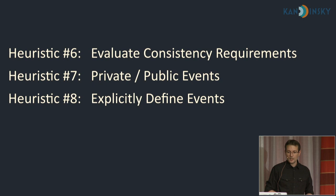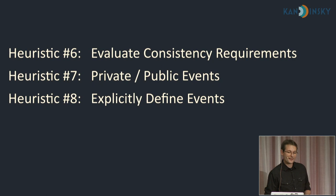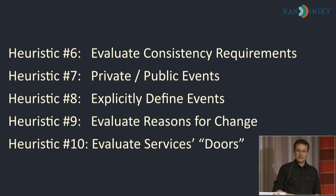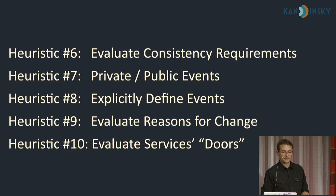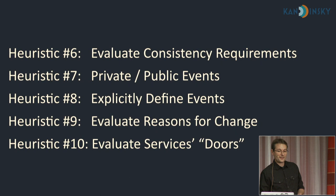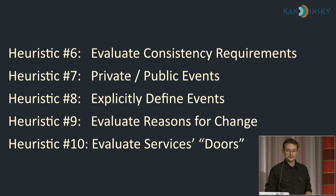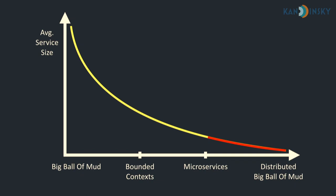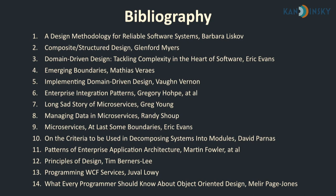Exposing too many event types couples the service to its clients — consider having private events as implementation details and exposing a restrained set of public events. Compress data from multiple private events into a wider public event to minimize outward-facing events. Remember that events come in two flavors — domain events and state-change events — use both when needed. Make sure events are self-describing and explicit. If multiple services change at the same rate, look to reduce coupling or merge them. Evaluate service front doors: if too wide, decompose; if dominated by integration methods, reassess boundaries. Keep decomposing past the threshold and you end up back where you started.